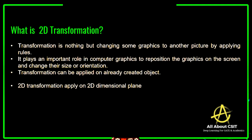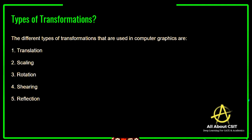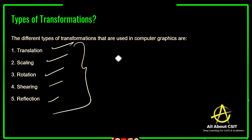Transformation is nothing but changing some graphics to another picture by simply applying rules. This transformation plays a very important role in the computer graphics field — it is used to reposition graphics on the screen and change their size or orientation. You have to apply the transformation only on already created objects. So, 2D transformation applies on 2D dimensional planes. The different types of transformations used in computer graphics are translation, scaling, rotation, shearing, and reflection. All these types can be applied on 2D images as well as 3D images. In this video, I am going to explain about the reflection.